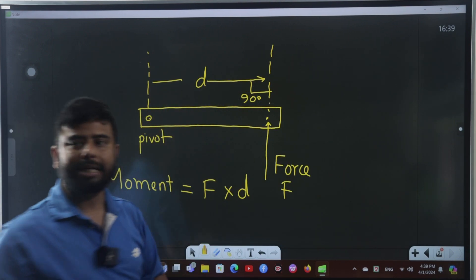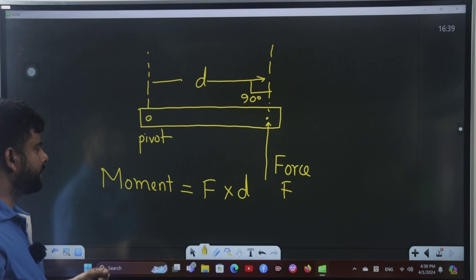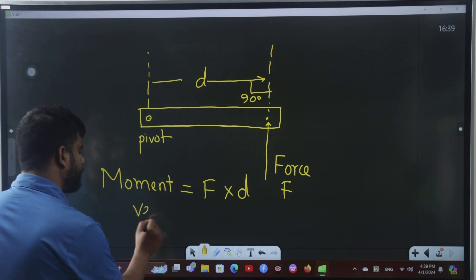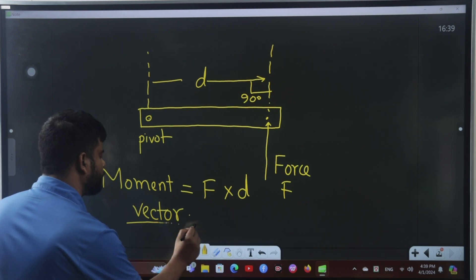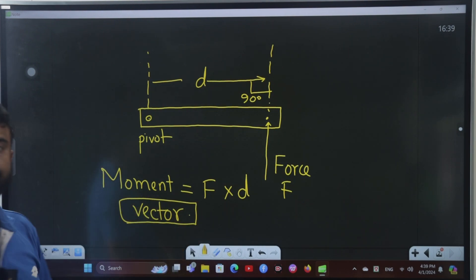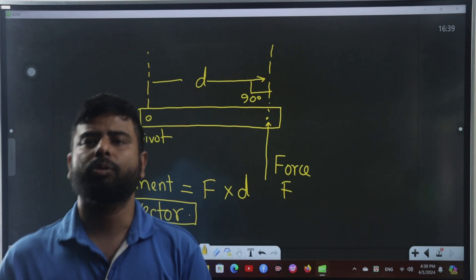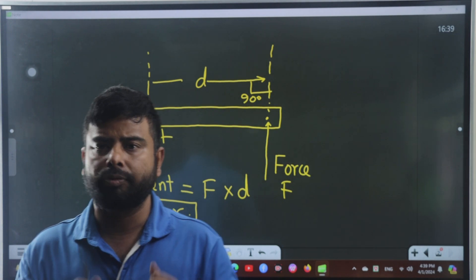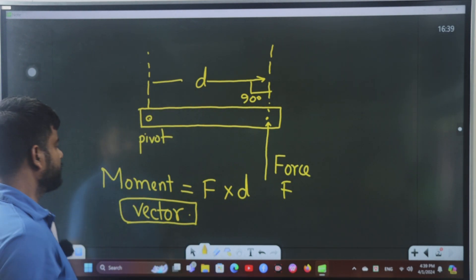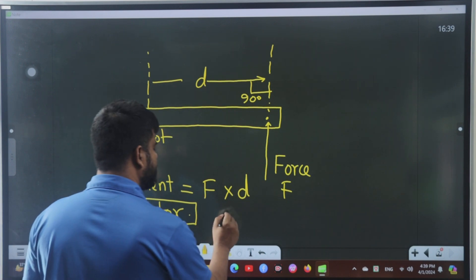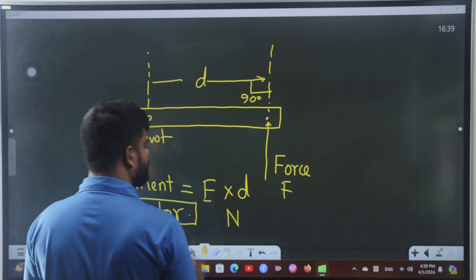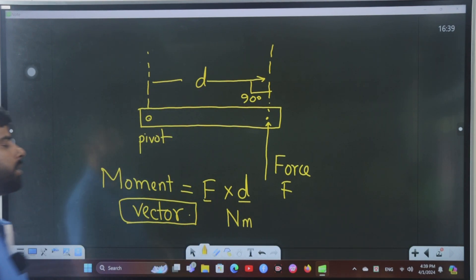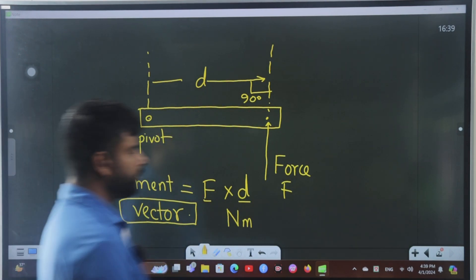The perpendicular distance means the distance makes a right angle — 90 degrees — with the pivot. Moment is a vector quantity because it has both magnitude and direction. The SI unit of moment is newton meter, since the unit of force is newton and the unit of distance is meter.